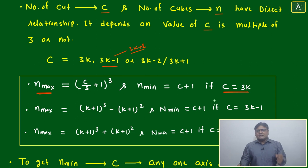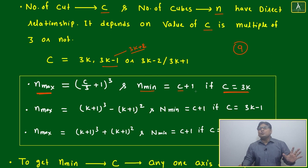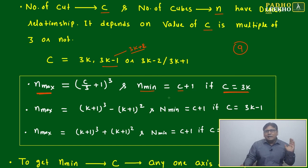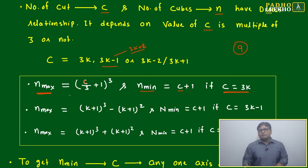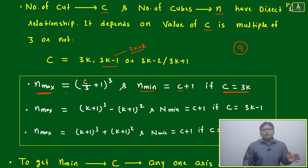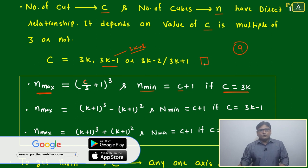For example, if c = 9 (which equals 3k), the minimum number of pieces is c+1 = 10, achieved by cutting along one axis. The maximum is obtained by distributing cuts equally: (c/3 + 1) cubed. A cube always produces a perfect cube number, just as a square produces a perfect square number — like 2 squared = 4, 3 squared = 9.